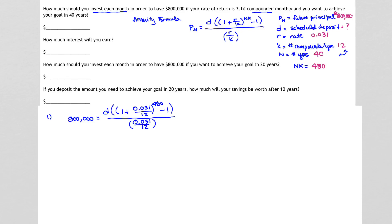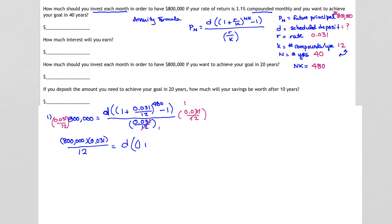To solve for D, I need to get rid of everything else. My first algebraic step is to multiply both sides of the equation by 0.031 over 12. On the right side it cancels, and on the left side I have $800,000 multiplied by 0.031 divided by 12. Then I need to isolate D by dividing by the quantity (1 plus 0.031/12) raised to the 480, minus 1.